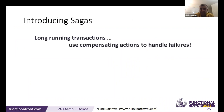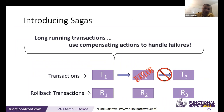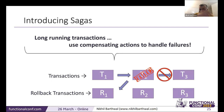Now let's talk about sagas. Sometimes you have long-running compensating actions for failures. In a distributed service environment, what if part of a transaction fails? You need to handle that. If you move to a new transaction but it fails, you create a rollback — a compensating transaction. For example, transferring $100 from one account to another: if you don't have $100 in your account, the transaction fails. Or if the destination account is closed, the money can't be transferred and comes back. That's how sagas are implemented.